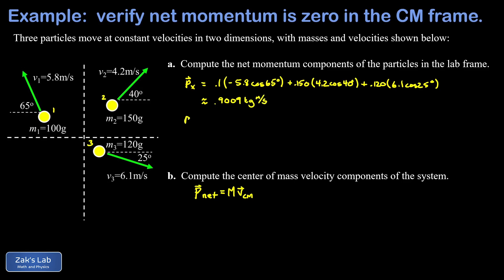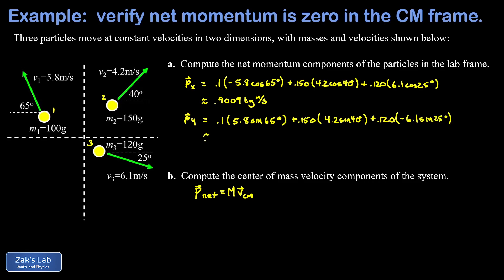Now we do the Y component. Particle one has an upward Y component of its velocity of 5.8 sine of 65. Particle two, with a mass of 0.150, has an upward Y component of 4.2 sine of 40. Particle three, with a mass of 0.120, has a downward Y component, so that takes a minus sign, given by 6.1 sine of 25. Keeping four digits, we get 0.6213 kilogram meters per second. So those are the net momentum components.